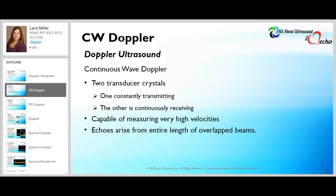For continuous wave Doppler, there are two transducer crystals — one is constantly transmitting while the other is constantly receiving. With continuous wave, there's no damping. It has a narrow bandwidth and a high Q, and because of that, it has the advantage of higher sensitivity in detecting small Doppler shifts as well as measuring very high velocities. However, the echoes arise from the entire length of the overlapping beams, and so there is range ambiguity.